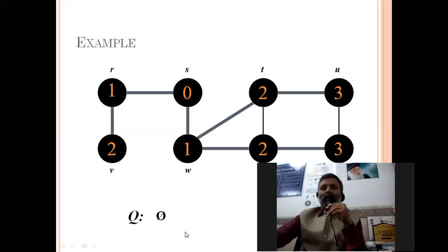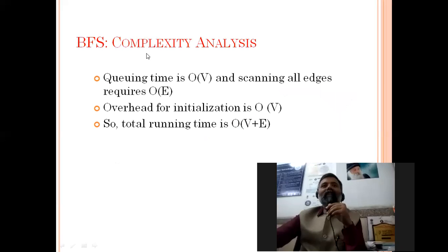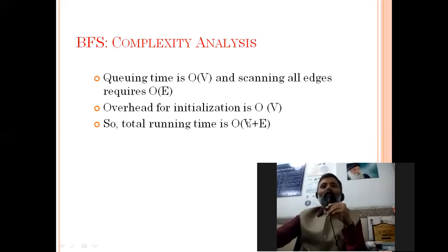The queue is now empty, so the operation terminates. All nodes have been covered. This is the BFS algorithm. For complexity: the queuing time requires the number of nodes in the graph, and for each node we may require scanning all edges. The total running time is O(V + E), with initialization overhead of O(V), so the overall running time is O(V + E).